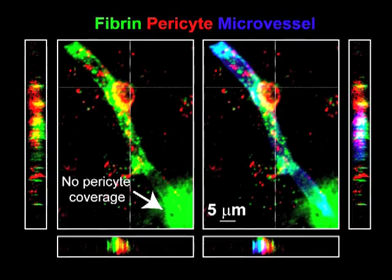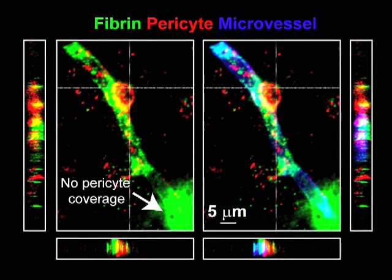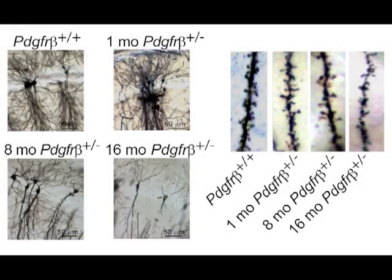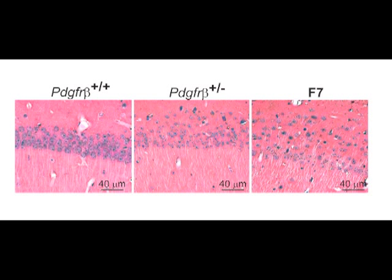To evaluate whether toxic accumulation of serum-derived proteins and hypoxia could lead to secondary vascular-mediated neurodegeneration, we analyzed neuronal structure and function with several techniques. As seen here, Golgi-Cox histologic analysis revealed a significant progressive loss of dendritic spines in the PDGFR-beta heterozygous mice at 8 and 16 months of age. Similarly, hematoxylin and eosin staining noted significant structural abnormalities in the CA1 hippocampal subfield at the same time points.